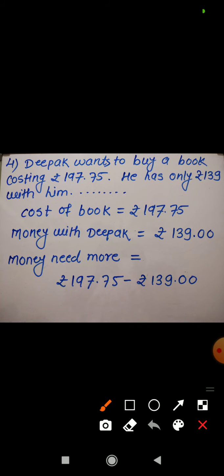Now come to the fourth word problem. Deepak wants to buy a book costing rupees 197.75. He has only 139 rupees with him. So how much more money does he need to buy the book?